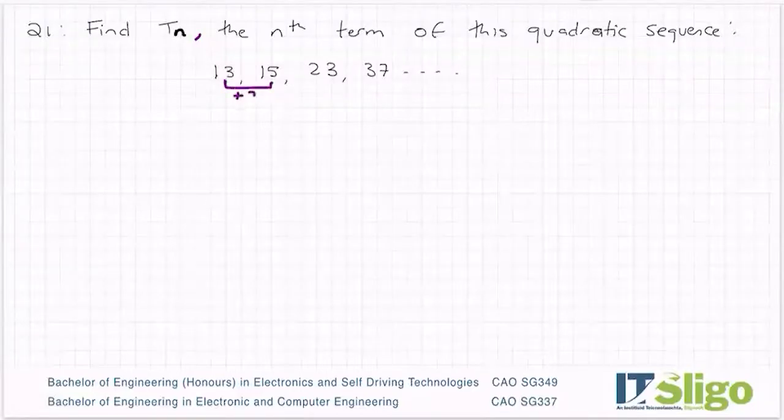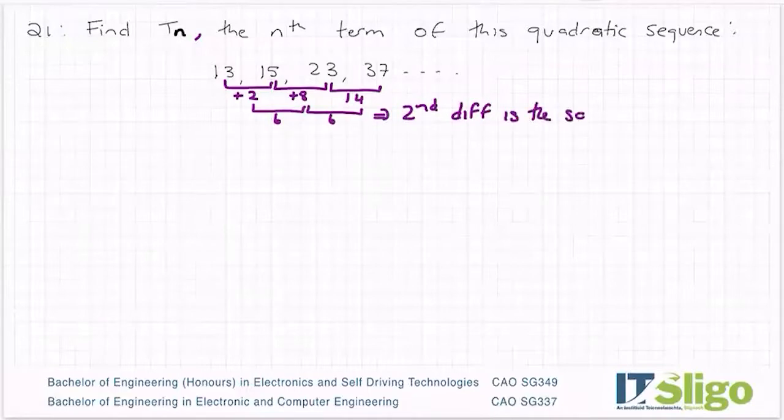So 13 to 15 is a difference of plus 2, 15 to 23 is a difference of 8, and the difference from 23 to 37 is 14. The difference between 2 and 8 is 6, between 8 and 14 is 6. So I would say the second difference is the same, therefore quadratic.